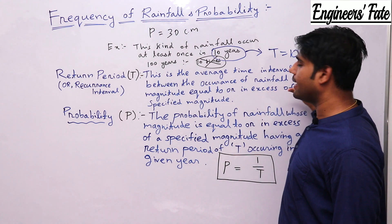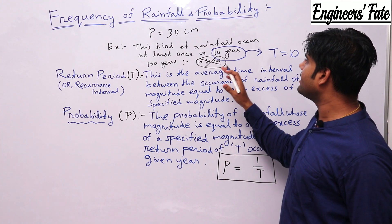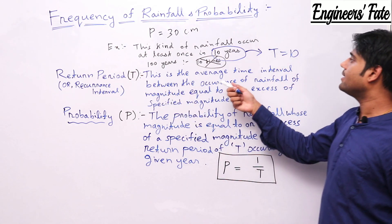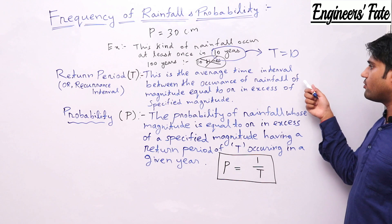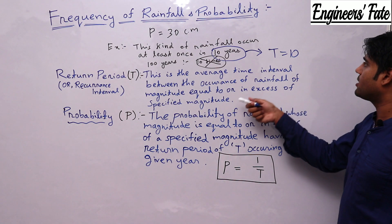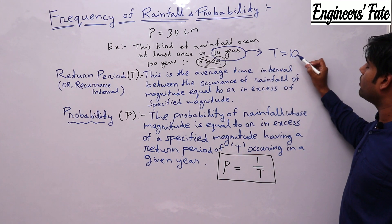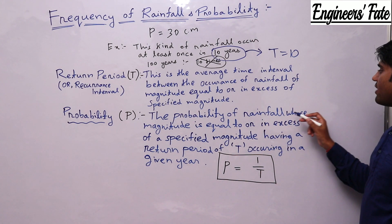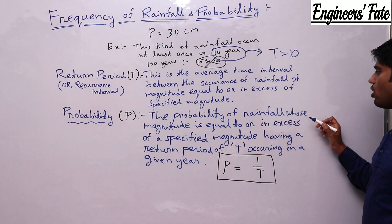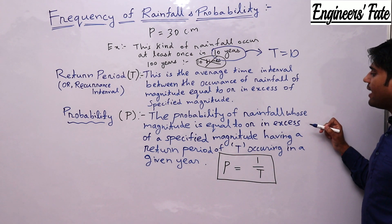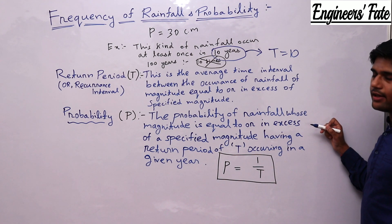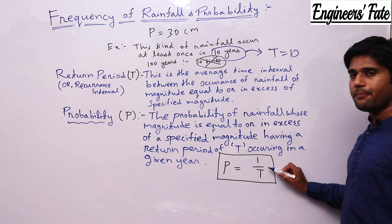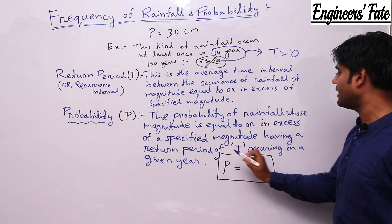Don't remember the entire definition — just remember that for a given specified year mentioned in the question, that will be the return period. It is the average time interval between the occurrence of rainfall of magnitude equal to or in excess of specified magnitude. Return period T equals 10. What is probability? Probability is denoted as P — it is the probability of rainfall whose magnitude is equal to or in excess of a specified magnitude, having a return period of T, occurring in a given year. Just remember: P equals 1 by T.